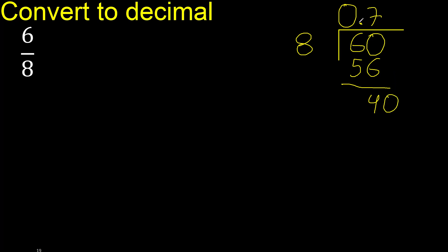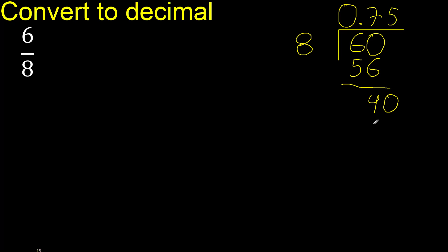The decimal point is here. Bring down 0 to make 40. 8 multiplied by 5 is 40. Subtract: 40 minus 40 equals 0. Therefore, finish.